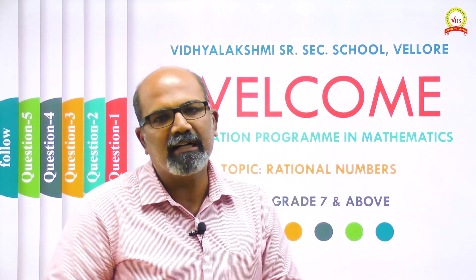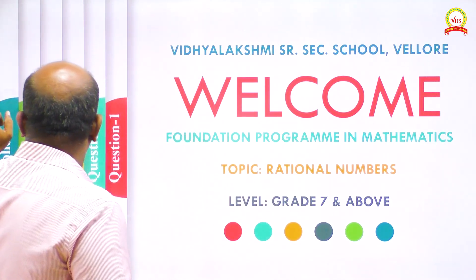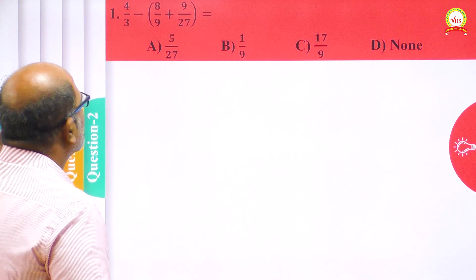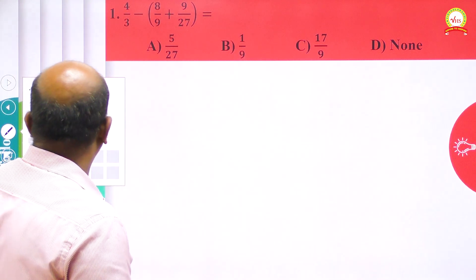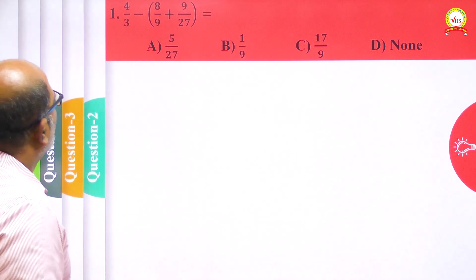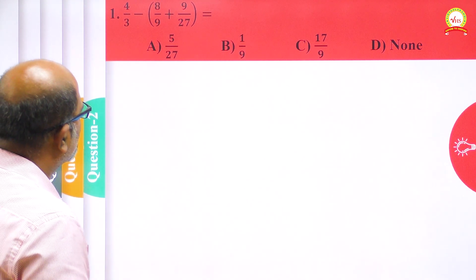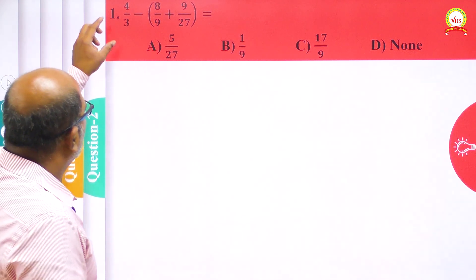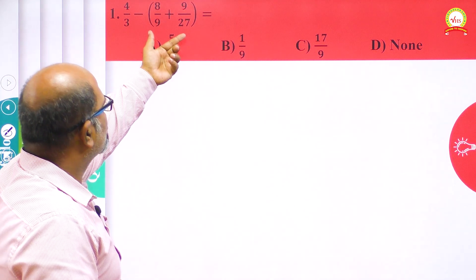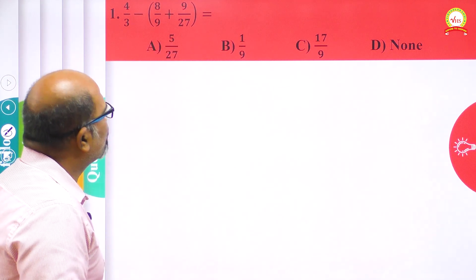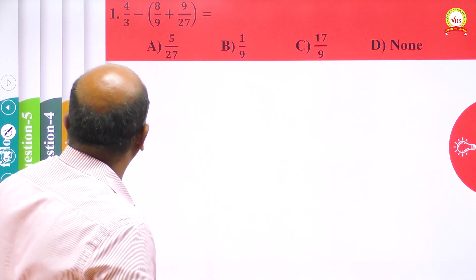Let us now start our session with the first question. You can see the first question here. It is actually a very simple question: 4/3 minus (8/9 plus 9/27). The 4/3 is given separately, and (8/9 plus 9/27) is given within the bracket. We have to simplify this expression and find the correct option.